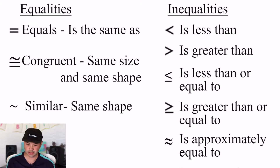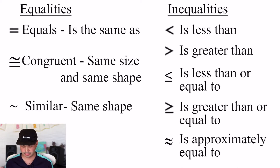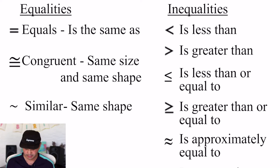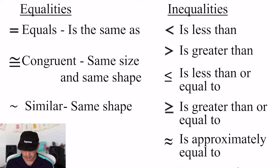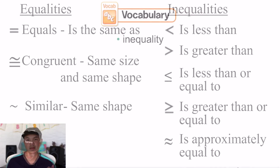As for inequalities, you have 'is less than' and 'is greater than.' And then with a line below it: 'is less than or equal to' and 'is greater than or equal to.' Also included in inequalities is showing that things aren't exactly equal — approximately equal to, or you guys are used to saying 'about.' So that's one of them as well.